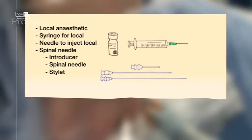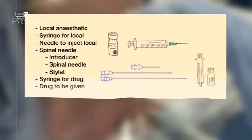Lastly, you need a 5ml syringe with whatever agent you're planning to inject into the subarachnoid space. In the case of anaesthesia, this is usually a long-acting local anaesthetic.